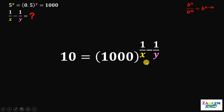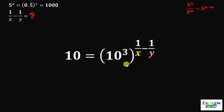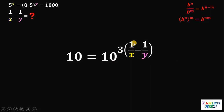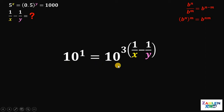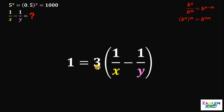So the right-hand side becomes 1000 raised to 1 over x minus 1 over y — which is exactly the expression we want to evaluate. Take note that 1000 is just 10 raised to 3. Again using the law of exponents, b raised to n raised to the power of m equals b raised to n times m. Therefore, the right-hand side becomes 10 raised to 3 times (1 over x minus 1 over y). Also note that the left-hand side, 10, has an exponent of 1. Since we have the same base and they are equal, 1 must equal 3 times (1 over x minus 1 over y).